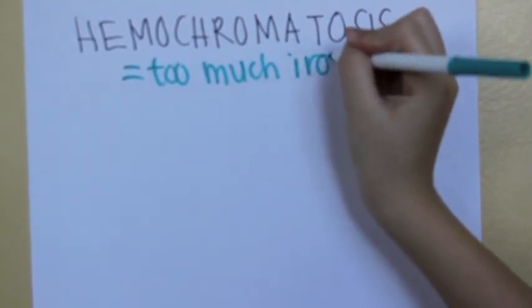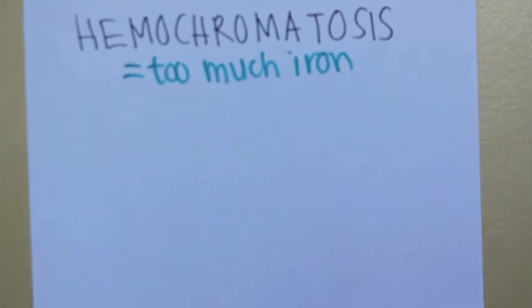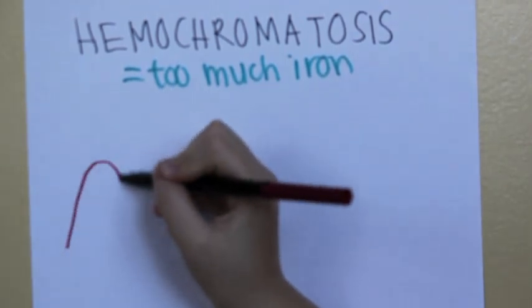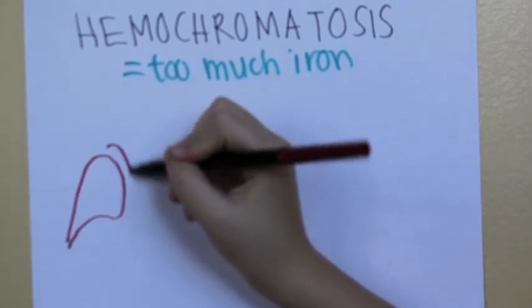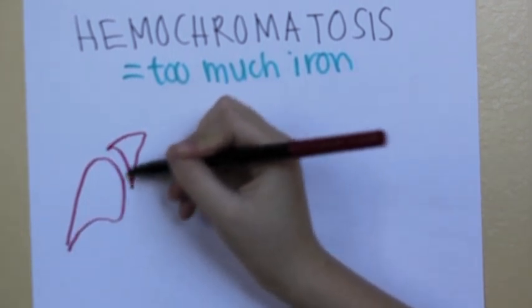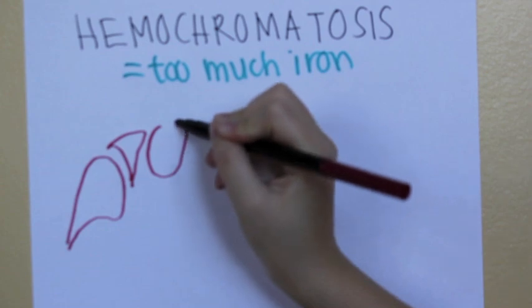Eventually, this excess iron is deposited into different parts of the human body, which leads to damage of the joints, vital organs, and overall body chemistry. Some of the symptoms of hemochromatosis are liver failure, heart failure, arthritis, infertility, and even cancer.